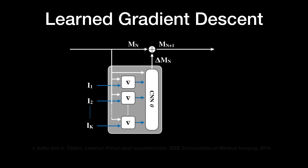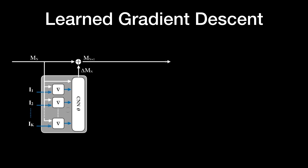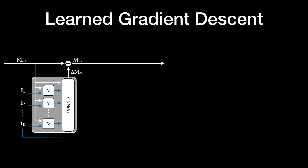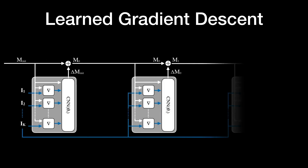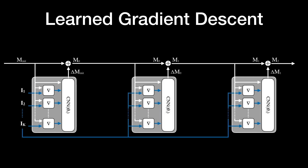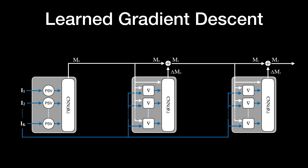We can stack these gradient computation and update blocks repeatedly, creating a form of recurrent network. We train the complete unrolled network by rendering the generated MPI to a held-out view. For our particular problem, we can also replace the initial update block with a simple per-plane CNN that operates on the plane sweep volumes of the input images, removing the need for an initial MPI estimate.